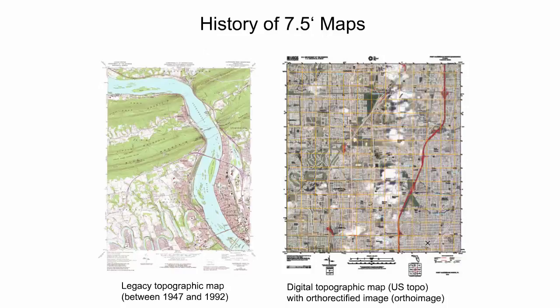Prior to 2009, USGS topographic maps were created through traditional cartographic methods and printed using the lithographic printing process. The left image shows an example of the standard USGS 7.5-minute topographic map series created during the period from 1947 to approximately 1992. The layout and design of a USGS digital topographic map, named US Topo and shown to the right, has the same extent, scale, and general layout as the older standard topographic maps. However, US Topo maps are published as PDF files with a geospatial extension called GeoPDF.